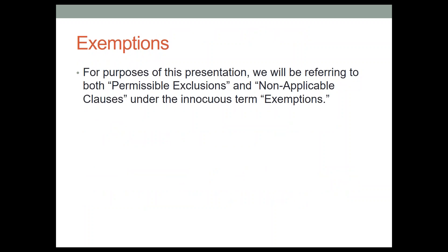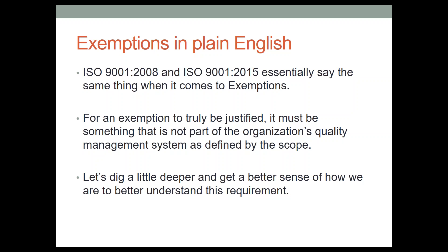So because we have these two terms — permissible exclusions and non-applicable clauses — for purposes of this presentation, I'm going to use the term exemptions. Exemptions is an innocuous term that doesn't appear in the standard, so we can use it as a collective term for this concept. In plain English, whether you read the verbiage from 9001:2008 or 2015, they're both essentially saying the same thing: for an exemption to truly be justified, it has to be something that is not part of the organization's quality management system as defined by the scope.